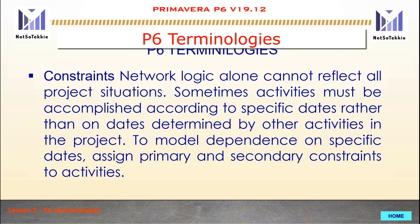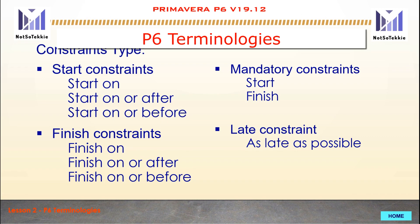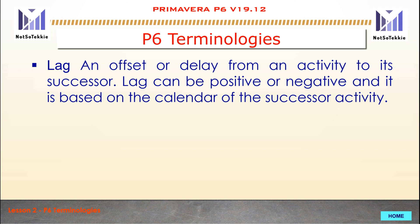Constraints: Network logic alone cannot reflect all project situations. Sometimes activities must be accomplished according to specific dates rather than dates determined by other activities. To model dependence on specific dates, assign primary and secondary constraints to activities. The constraint types are: Start Constraints, Finish Constraints, Mandatory Constraints, and Late Constraints. Lag is an offset or delay from an activity to each successor. Lag can be positive or negative and is based on the calendar of the successor.